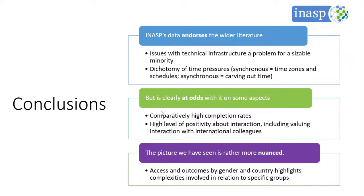There exists a dichotomy of time pressures — neither synchronous nor asynchronous learning comes without its challenges. However, on some aspects INASP data is at odds with the wider literature. We have comparatively high completion rates on our online courses and a very high level of positivity about interaction online, which includes appreciation of international interaction and collaboration. On yet other aspects, the picture is more nuanced than the one depicted in the literature. When it comes to access and outcomes by gender and country, the picture is complex and differs for specific groups. There is a need to systematically collect data going forward, disaggregated by gender, country, and region, to understand more about those differences and how they change with time.